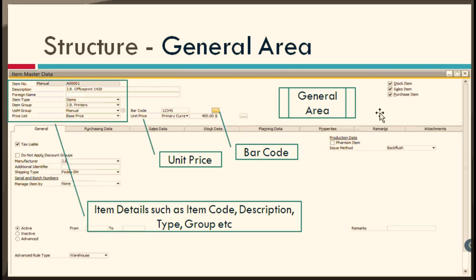Similarly, marking an item for purchasing or sales signifies that the item can be bought or sold on marketing documents. If you mark an item as inventory only, you cannot buy or sell it. For example, an item you never purchase but manufacture in-house and then sell would be marked for inventory and sales. A service item would be marked only for sales.